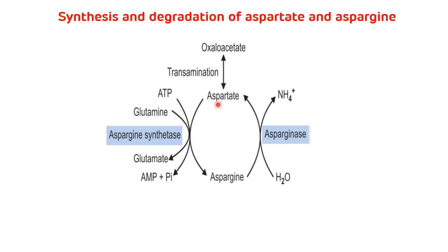Now, synthesis and degradation of asparagine. Aspartate can be converted to asparagine with the help of asparagine synthetase enzyme. For the amide formation, the nitrogen atom is donated by glutamine, so glutamine gets converted to glutamate, and there is also a requirement of one molecule of ATP. Asparagine is degraded by asparaginase, which removes the amide group from asparagine in the form of ammonia, converting asparagine to aspartate.